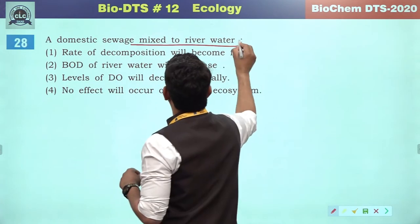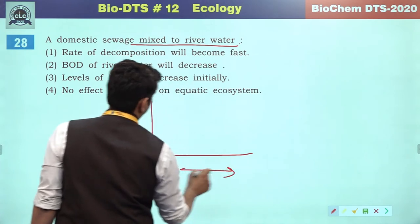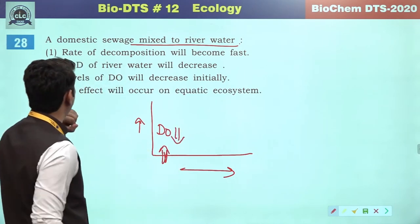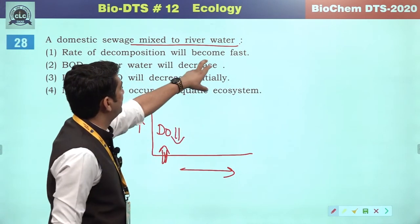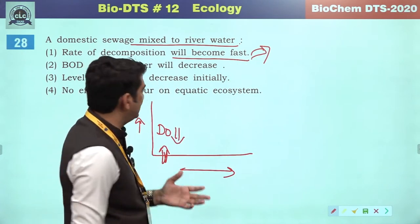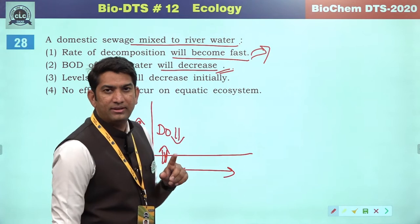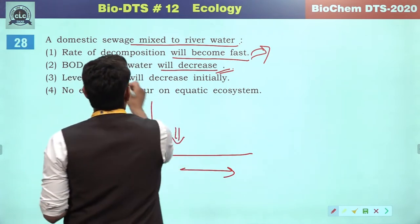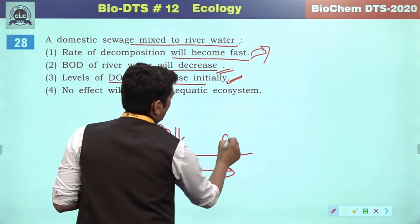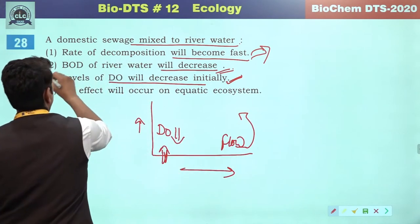A domestic sewage mixed into river water — dissolved oxygen levels will decrease. Rate of decomposition will become fast but this depends on conditions such as how many decomposers are there. BOD of river water will not decrease — biochemical oxygen demand will increase. Dissolved oxygen levels will decrease initially, then as river water flows, dissolved oxygen levels will increase again. So the third will be the correct answer.